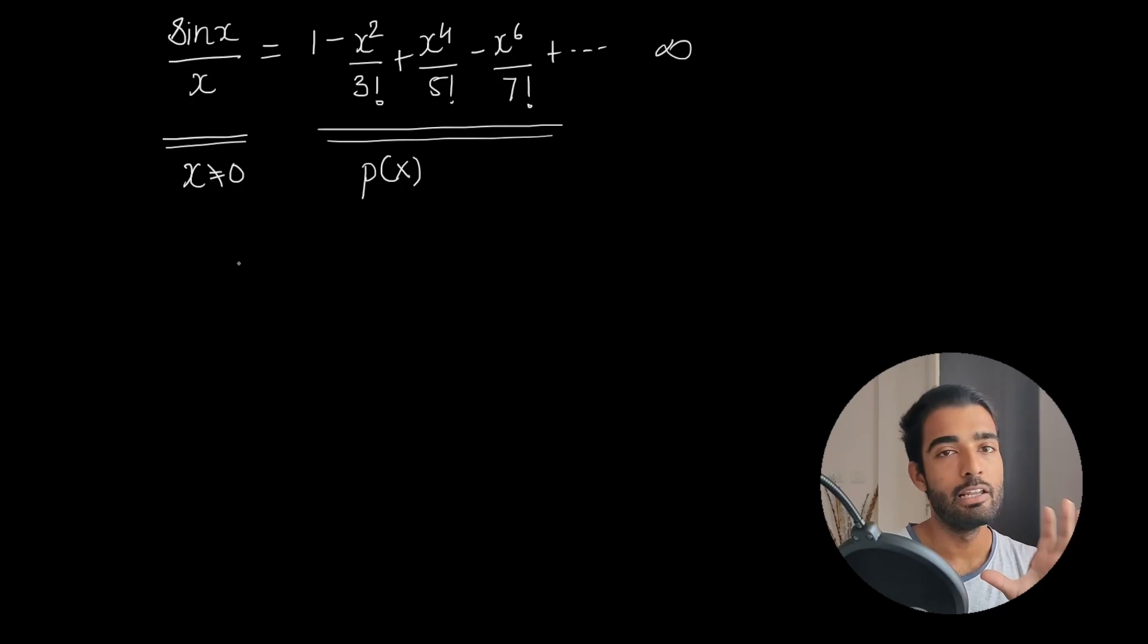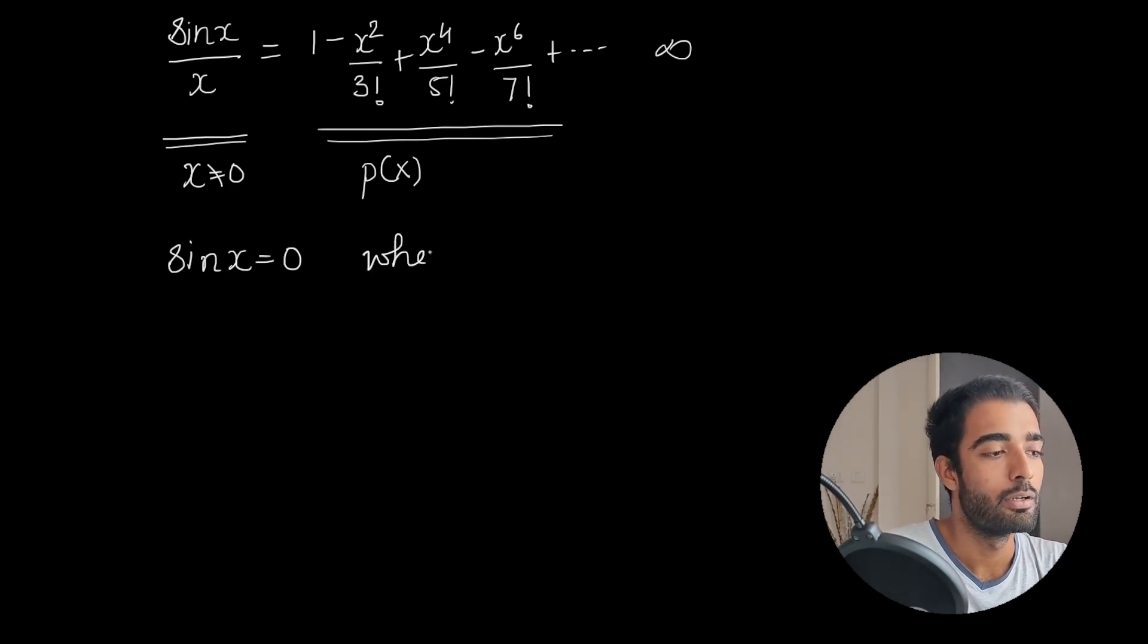Now looking at the left-hand side, we can predict something about the roots. 1/x cannot be 0 since x is positive and x cannot be 0, and sin x can be 0 at nπ, where n belongs to integers. Hence we can write this polynomial p(x) equals 1 - x/π.